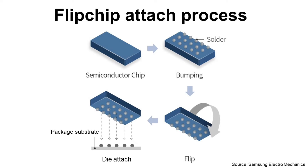This process starts with sawn die with bumps. The die is flipped, meaning the die pad with bumps will face down and attach on the package substrate.